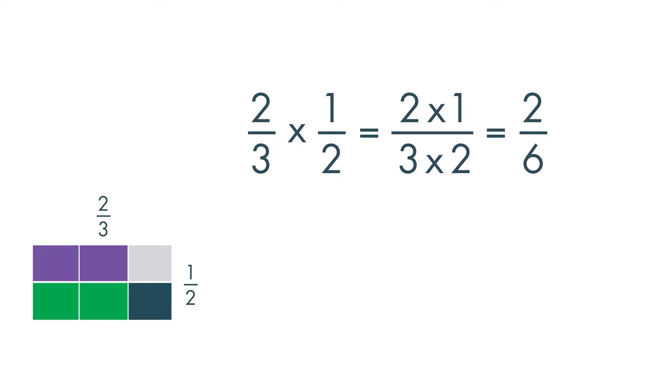Two-thirds times one-half is equal to two-sixths. Two-sixths can be simplified because both numbers can be divided by two. Two divided by two is equal to one. Six divided by two is equal to three.